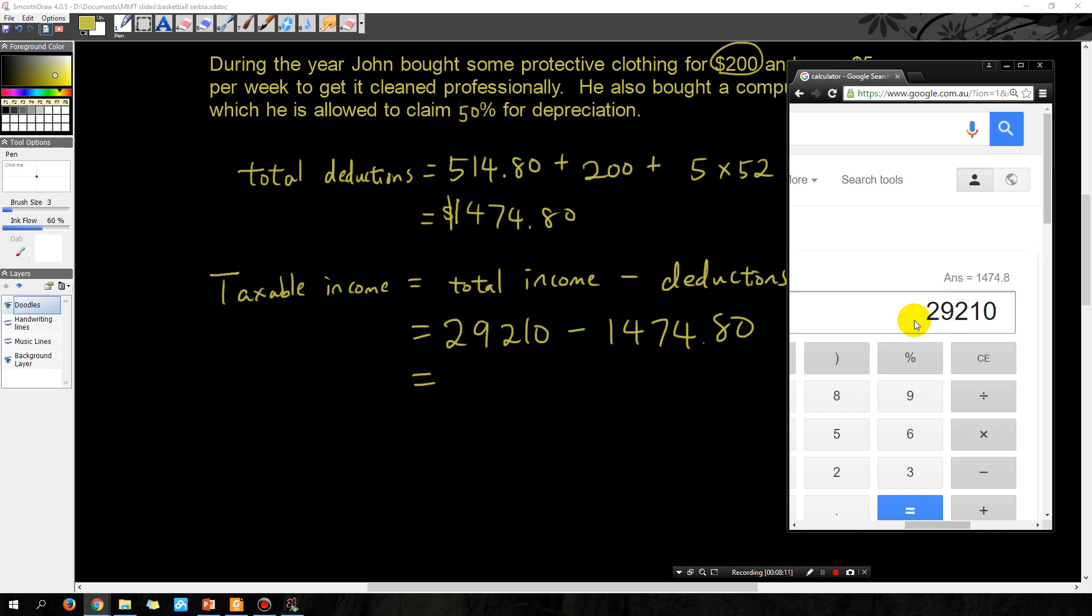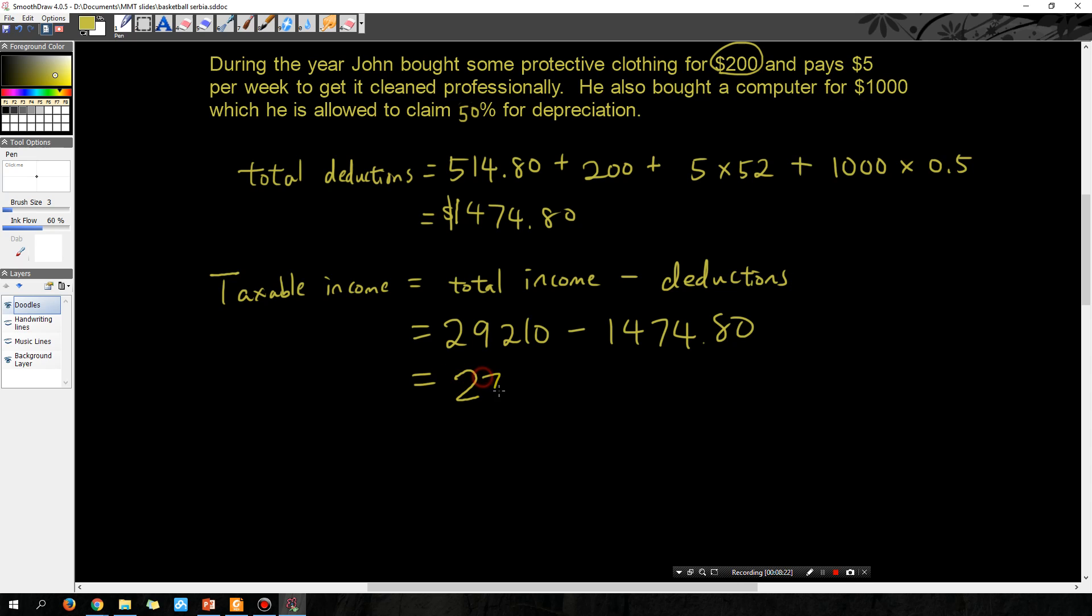29,210 minus 1474.8 and the answer is 27,735.20. So $27,735.20 would be his taxable income.